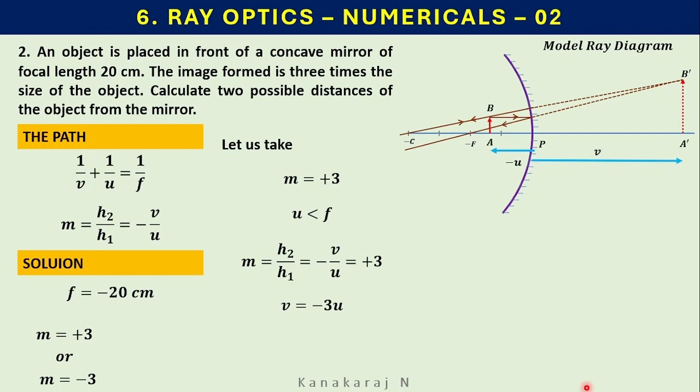Let us have this value v equals minus 3u. Remember, u is negative. Minus 3 times minus u, you know that v becomes positive.